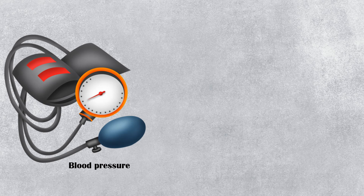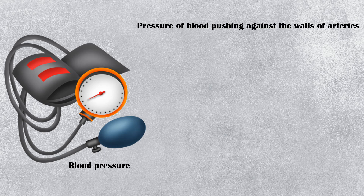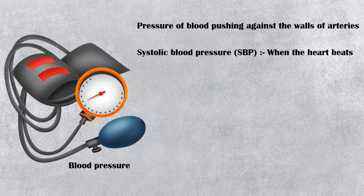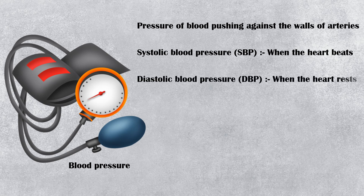Blood pressure is the pressure of blood pushing against the walls of the arteries. It is measured using two numbers. The first number, called systolic blood pressure, measures the pressure in the arteries when the heart beats. The second number, called diastolic blood pressure, measures the pressure in the arteries when the heart rests between beats.